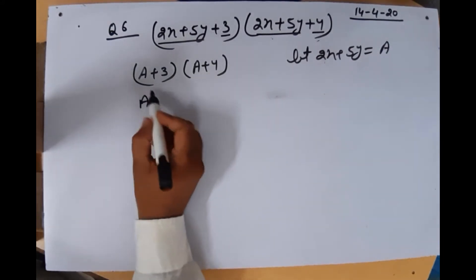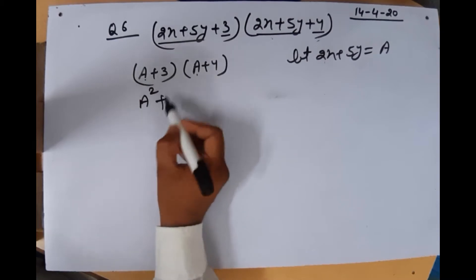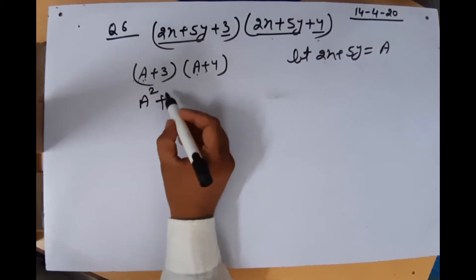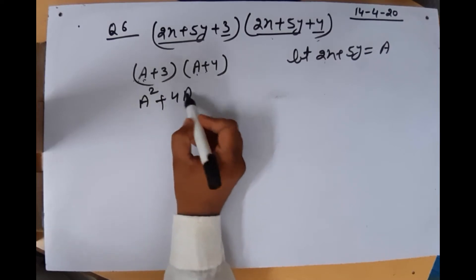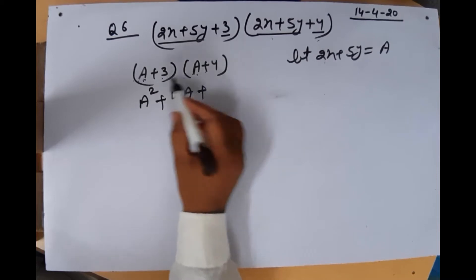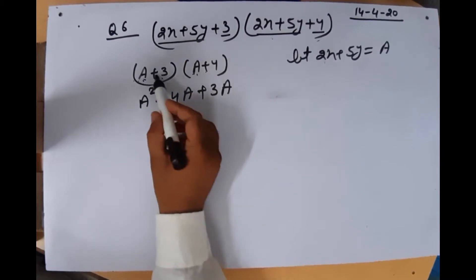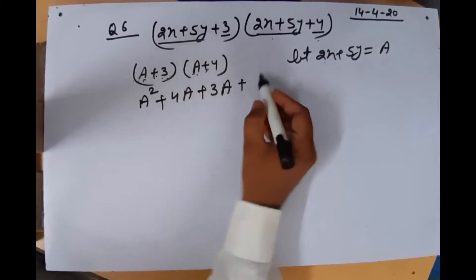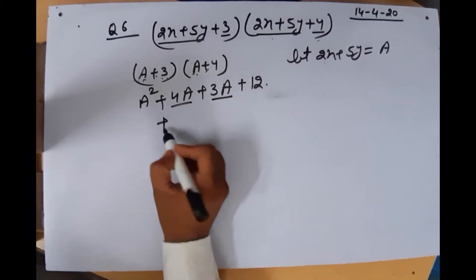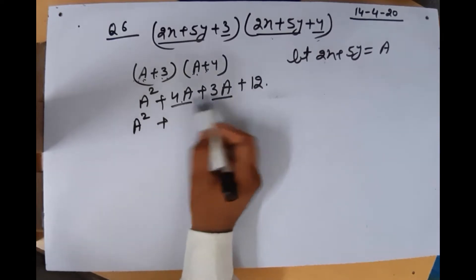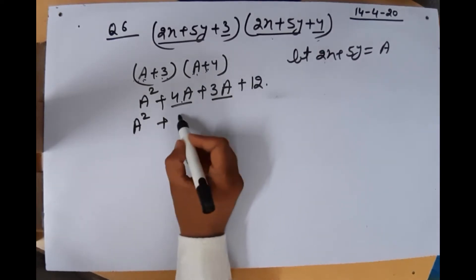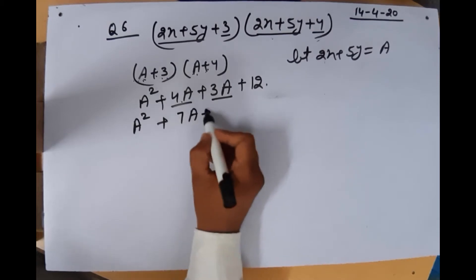Multiplying these two brackets: (A + 3)(A + 4) = A² + 4A + 3A + 12. Now 4A and 3A are like terms, so they add to give 7A. The result is A² + 7A + 12.